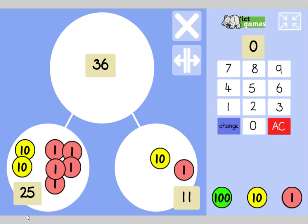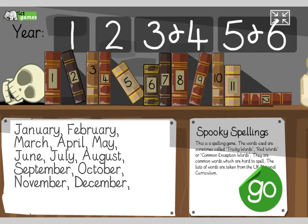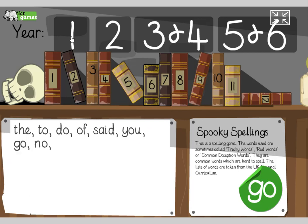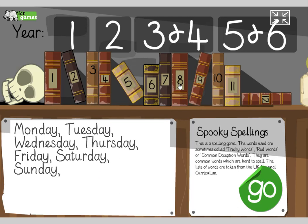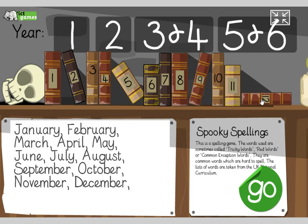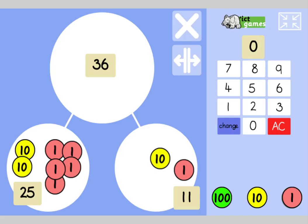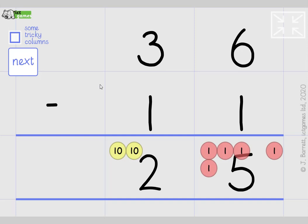That'll do for today. Year Ones, go to Spooky Spellings, Year One Book Eight to practise the days of the week. Year Twos, Book Twelve for months of the year. There's also vertical subtraction practice with no tricky columns, and I'll put the link for Bunny Battlefront for any Year Twos who are feeling really good with their times tables. Super job everyone!